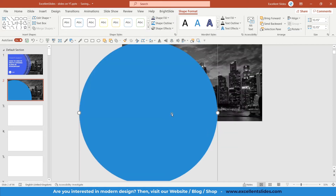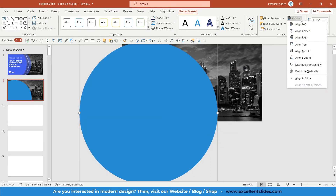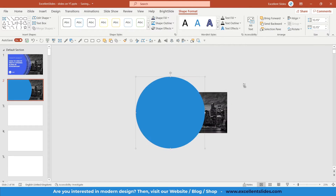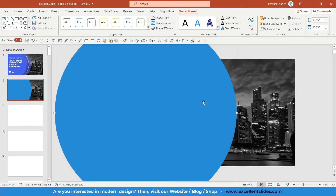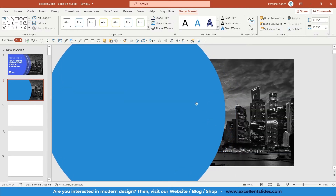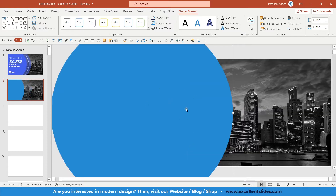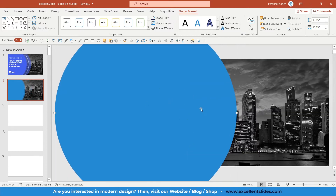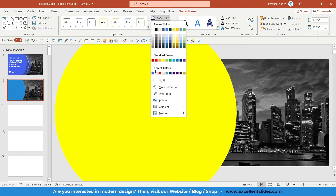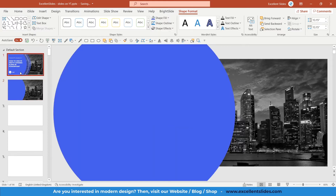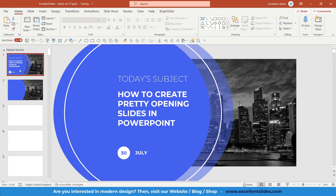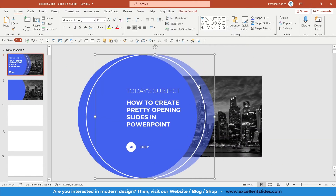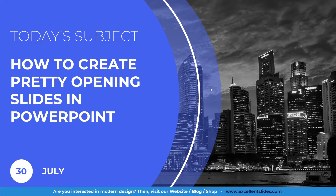Now we can align it to the middle: Shape Format, Align, Align Middle. I think we can place it a little bit to the left. We need to change the color, so go to Shape Format, Shape Fill, and pick this color — as you can see it's the same color.